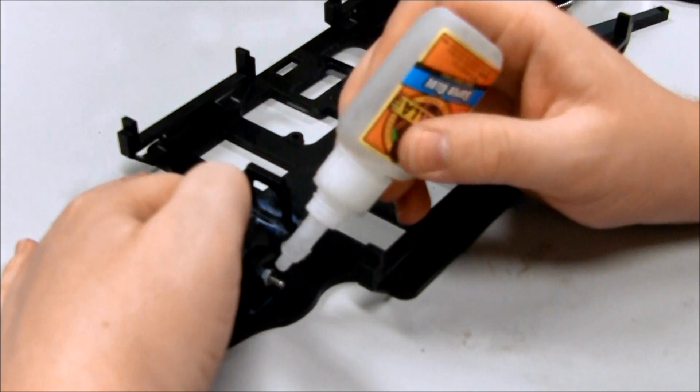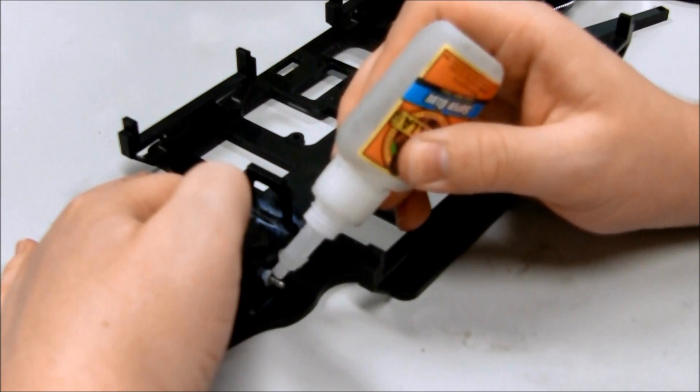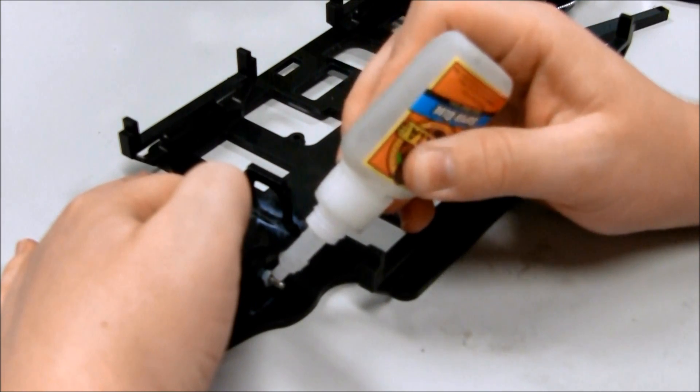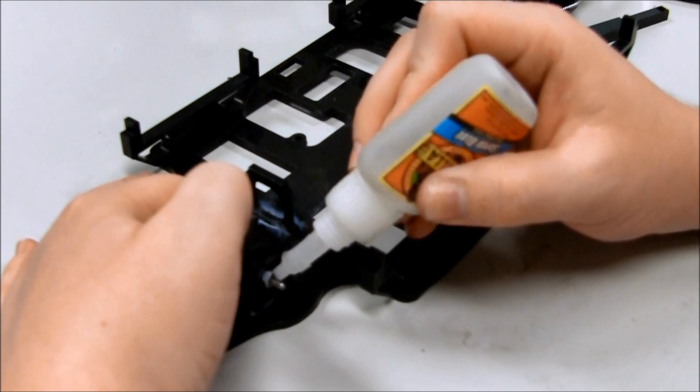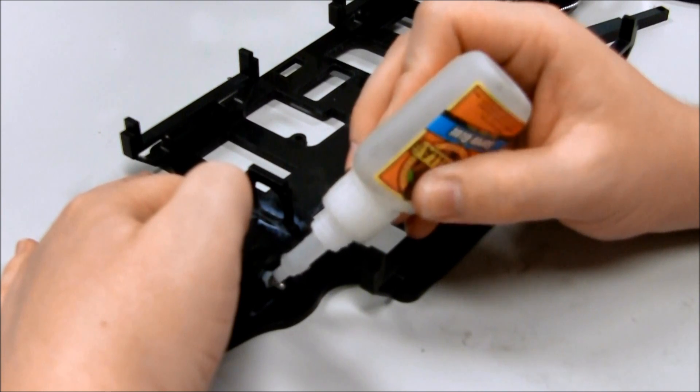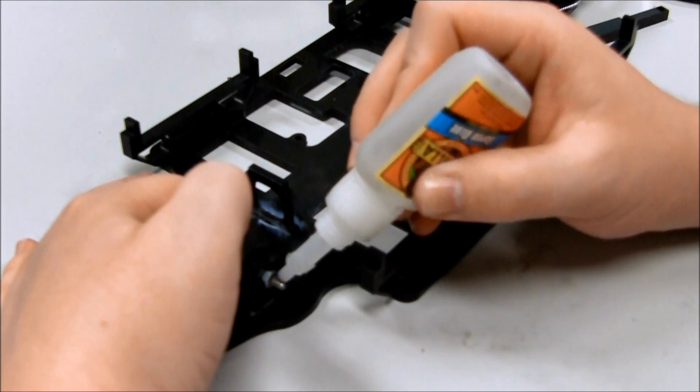Place a dab of superglue on the 440 nut so the nut cannot rotate off the screw. Be careful during the entire head assembly to not let any glue enter the joints. If the glue does enter the joints, the entire head needs to be disassembled, cleaned out, and reassembled.